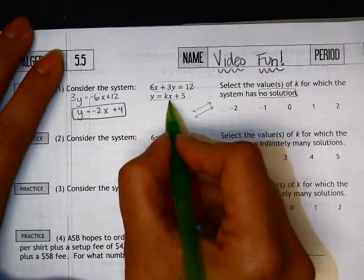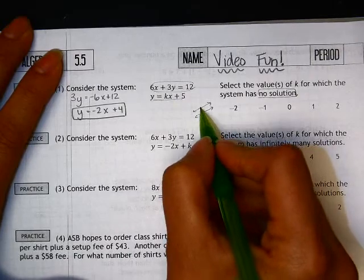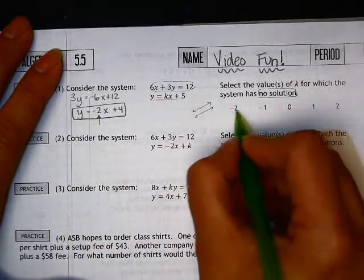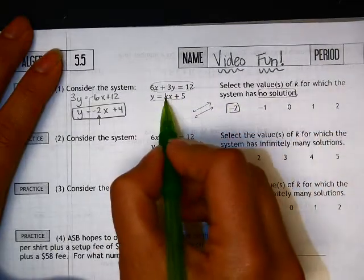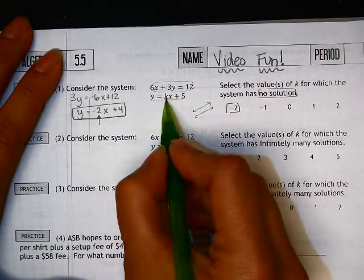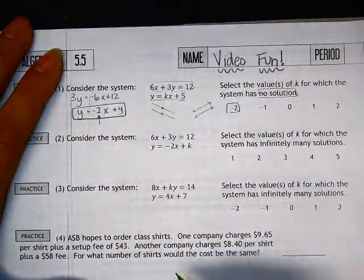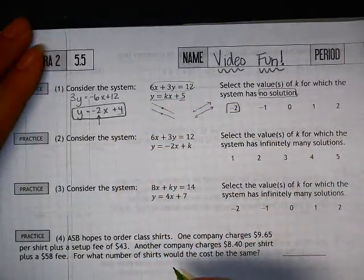This is the problem here. If you notice, I want these to be parallel. Parallel means they have to have the same slope. If I plug in negative 2 here, these would have the same slope but different y-intercepts. One would be up at 5 and one would be at 4, so those would be parallel to each other.